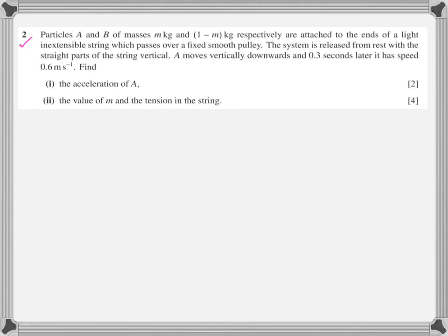Question number two. Particle A has mass m kg, Particle B has mass (1-m) kg. They are attached to the ends of a light, inextensible string which passes over a fixed smooth pulley. The system is released from rest with straight parts of the string vertical. A moves down and 0.3 seconds later it has speed 0.6 m/s. Find the acceleration, the value of m, and the tension in the string.